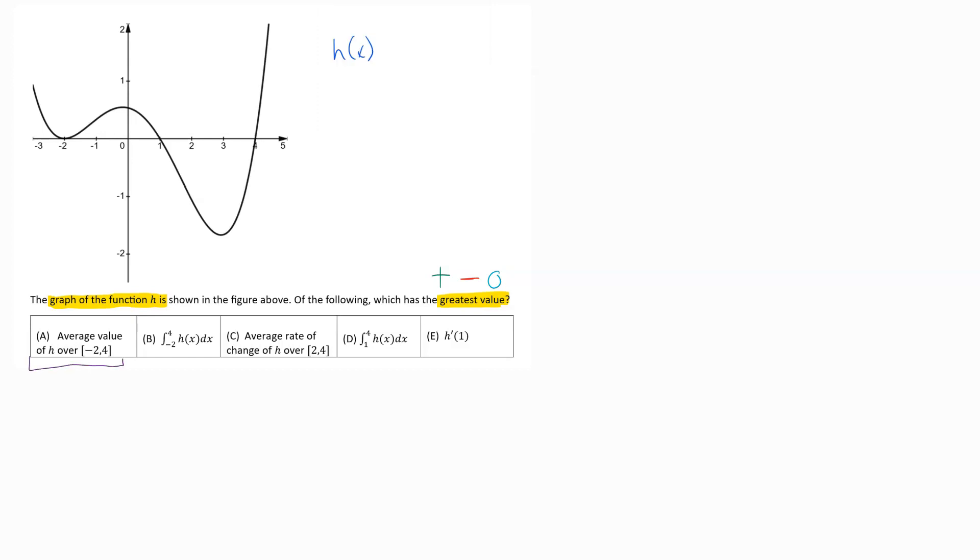So on option A, option A is asking us to find the average value of h over this given interval. Average value is an integral formula that we have to just have memorized. So the average value formula for an integral looks like one over B minus A times the integral from A to B of whatever your equation is.